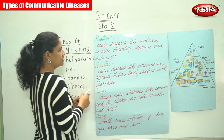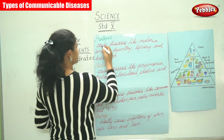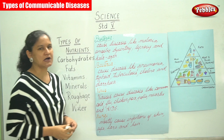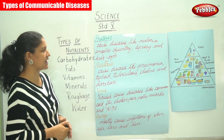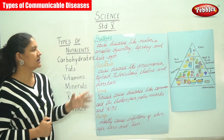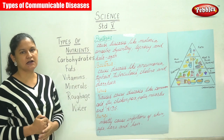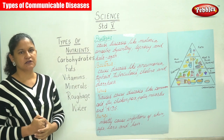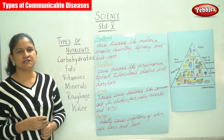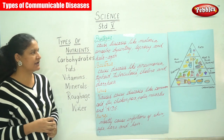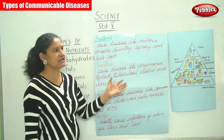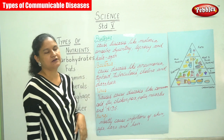The first type of communicable disease is caused by protozoa. Protozoa are germs that cause diseases like malaria, amoebic dysentery, leprosy, and kala-azar.